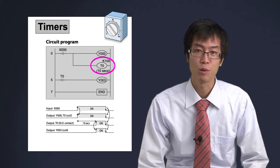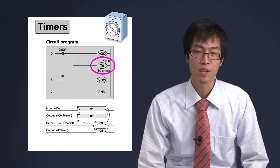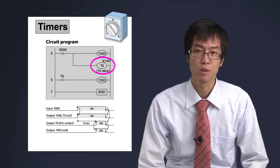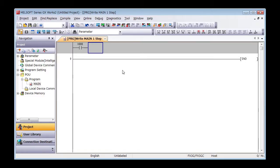For example, if you set timer T0 as 100, T0 contact will not turn on until after T0 coil has been energized for 10 seconds. This is used to program a delay.